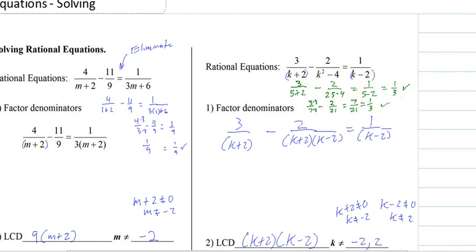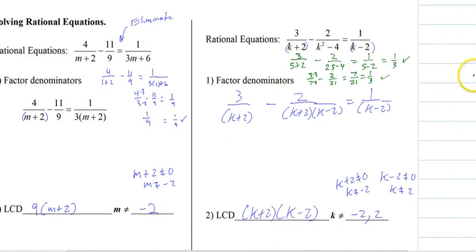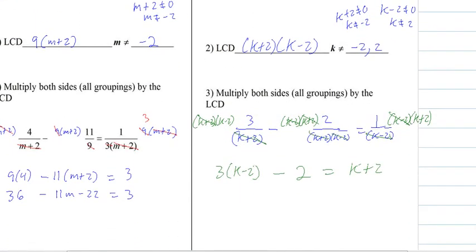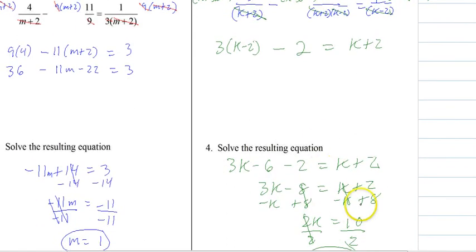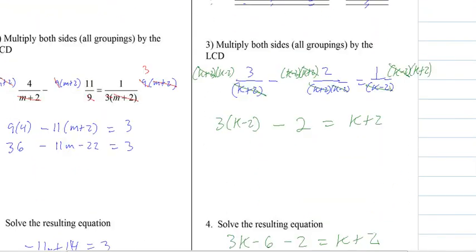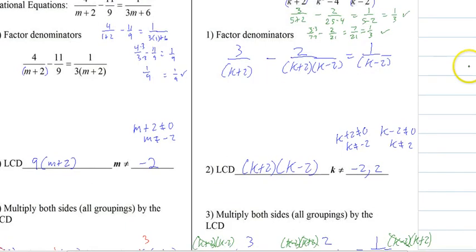And that's solving equations. So again, the steps are factor the denominators. And we do this so that we can find an LCD. And then we use our LCD to write our restrictions. And then we multiply both sides of the equation, every single group that we have, by that LCD, and it will remove every single fraction, which leaves us a nice equation that we can solve. Check our restriction, and then check the answer. And that's everything.